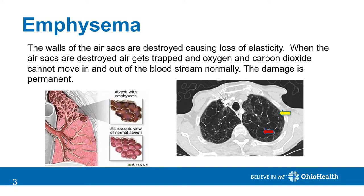On the lower left, you see emphysematous changes in the upper section of lung. This is the most common area for emphysema to occur. To the right is a CT scan. The yellow arrow points to a small area of normal tissue, whereas the red arrow points to damaged air sacs and air trapping.